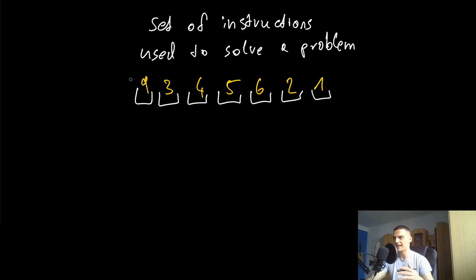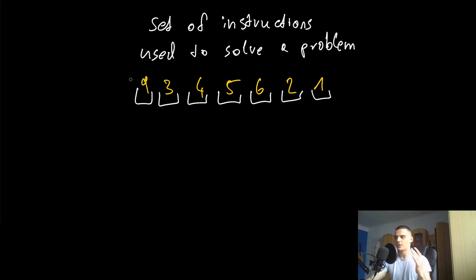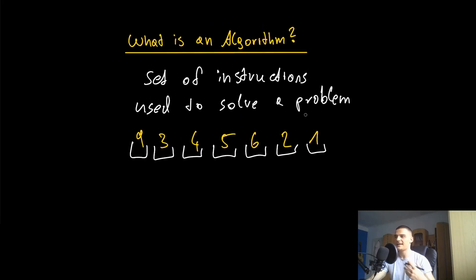Selection sort is not the most efficient algorithm. The point I'm trying to make is that there are different algorithms that can solve the same problem with different efficiency. We're going to talk about what efficiency and runtime complexity actually mean in a future episode. But for now, you need to know that there are different algorithms that work in different ways and can solve the same problem with different runtime complexity. It's important to find the algorithm that solves the problem with the best efficiency.